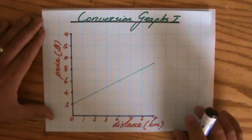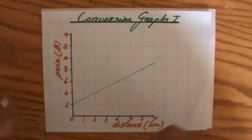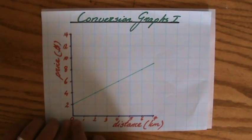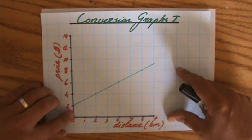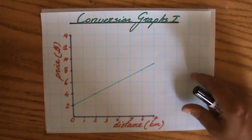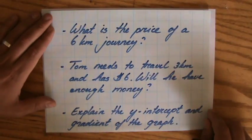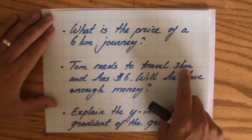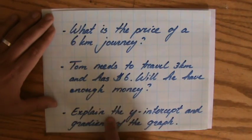Now, what is going on here? A conversion graph. Let's say this represents what you have to pay when you take a taxi. And as you can see, horizontally I have the distance in kilometers from 0 up to 7. And vertically, I have the price in dollars where each block represents $2. And then you're going to answer questions similar to the three that I just created. What is the price of a six kilometer journey? Tom needs to travel three kilometers and has $6. Will he have enough money? And explain the y-intercept and gradient of the graph.